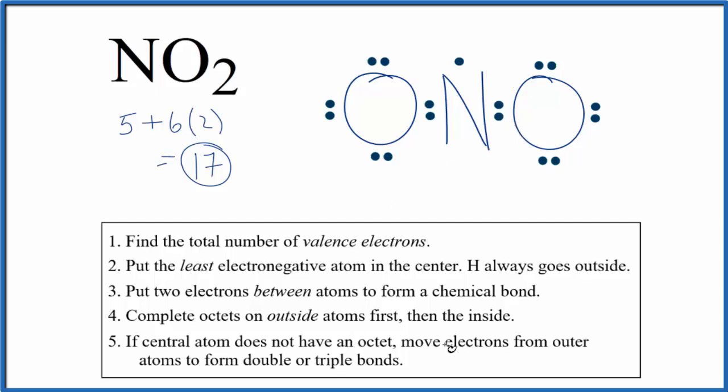So we can move some electrons from these outer atoms to the center and form some double or triple bonds. Let's see how that works. We move these 2 right here. We're still using 17, but now this oxygen has 8. The nitrogen has 2, 4, 6, 7. This oxygen has 8. So we're close. But how do we resolve this problem here with this single electron and nitrogen not having an octet?